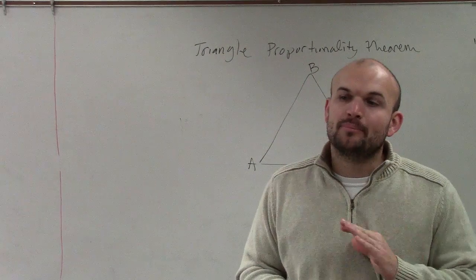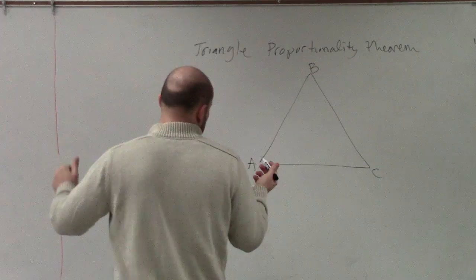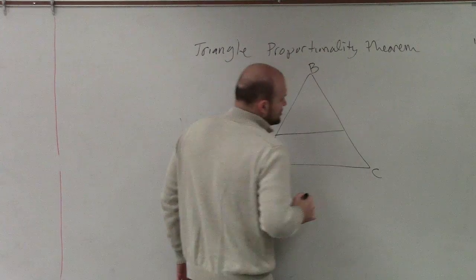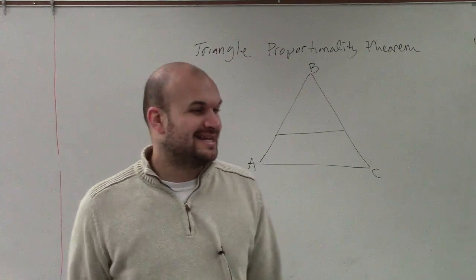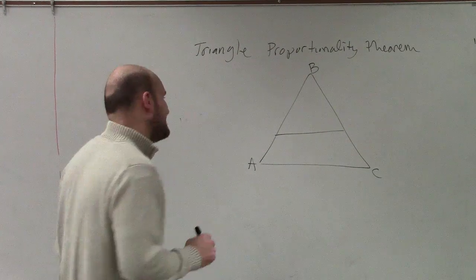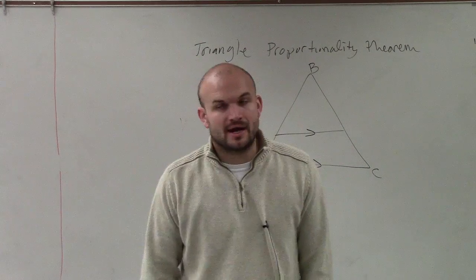and we have a parallel line that is cut across it. Remember, we've seen those type of triangles, right? You guys start seeing these, and they started confusing you. So you have another line that's in your triangle, and it is parallel to one of the sides. All right?